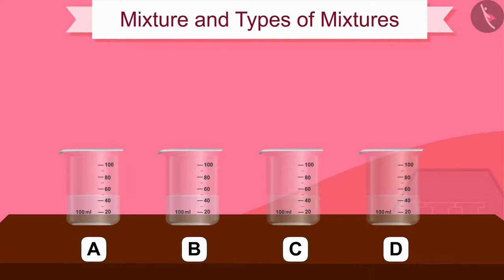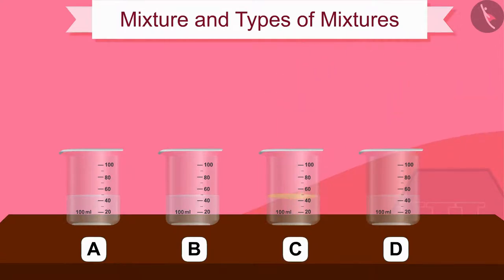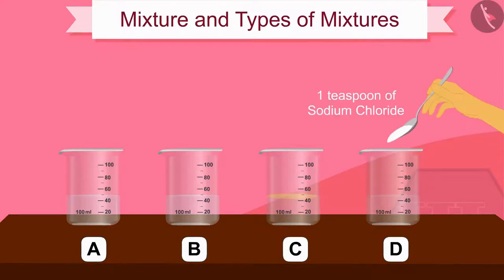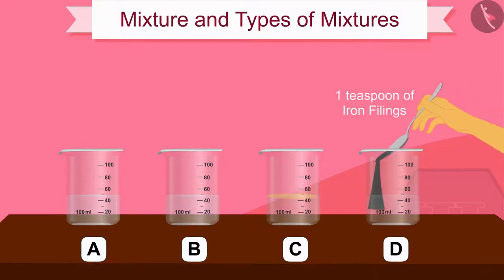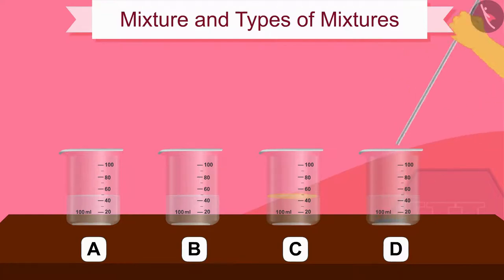Ask your second friend to dissolve one teaspoon of oil in beaker C, and finally ask the third friend to dissolve one teaspoon of sodium chloride and iron filings in beaker D. Notice the texture of all the blends.